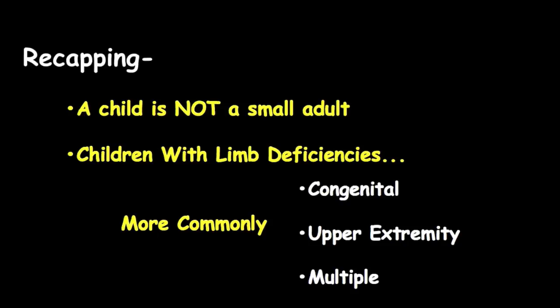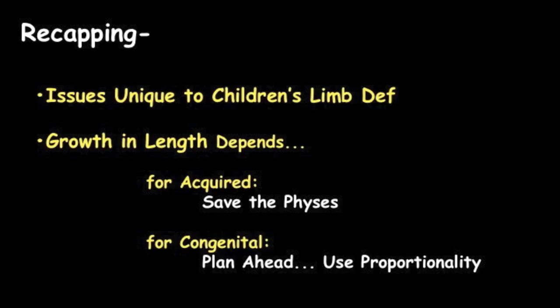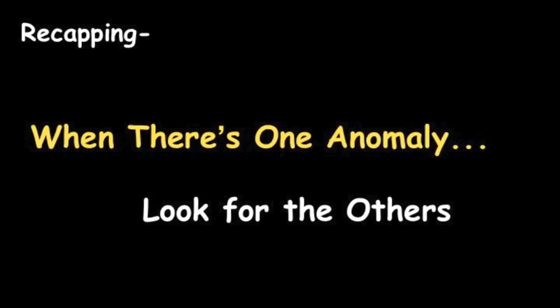In recapping: a child is not a small adult. Children with limb deficiencies are more commonly congenital, more commonly involve the upper extremities, and more commonly involve multiple limbs. The issues unique to children's limb deficiencies focus around growth in length — for acquired disease, save the physis; for congenital, plan ahead using the principle of proportionality. And keep in mind that when there's one anomaly, look for others.